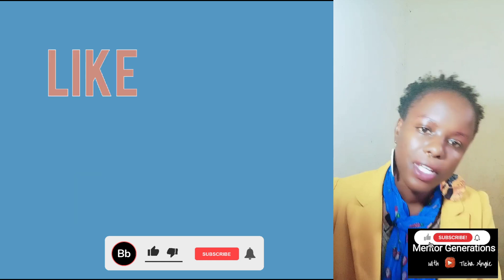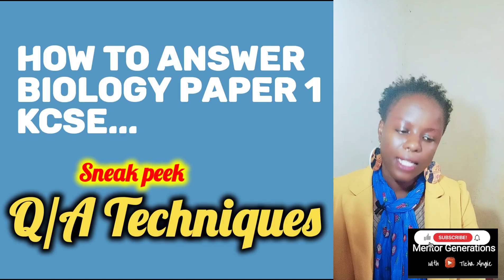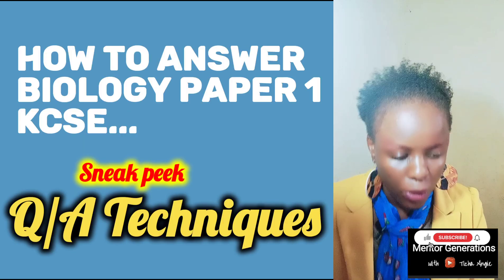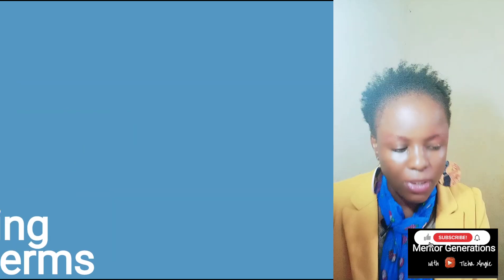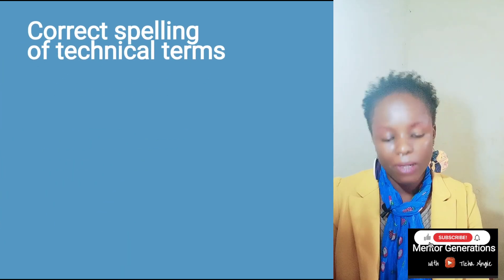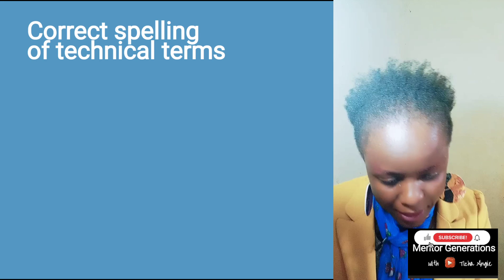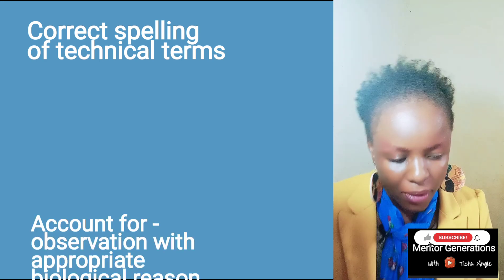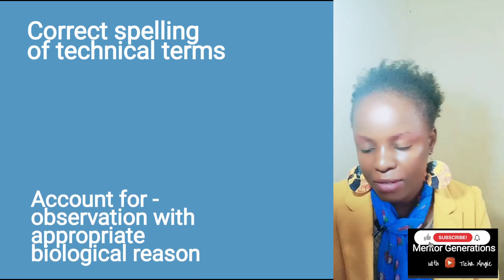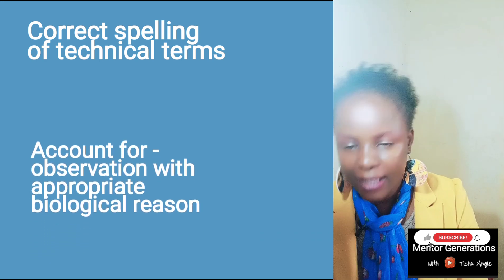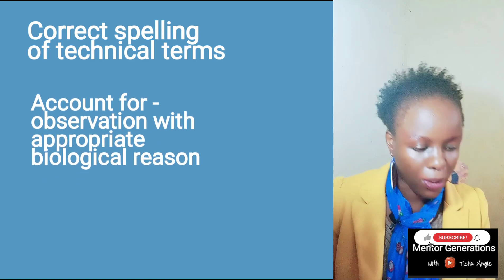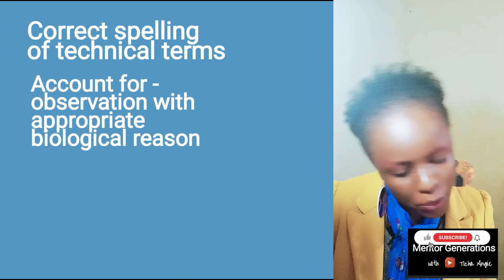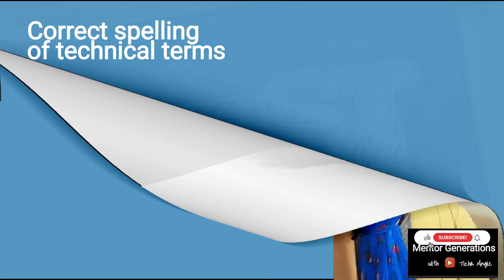Now, on to the Q&A techniques. First of all, technical terms must be spelled correctly. When you're asked to account — for example — you must give the observation first, and then give the biological meaning to support your observation made.